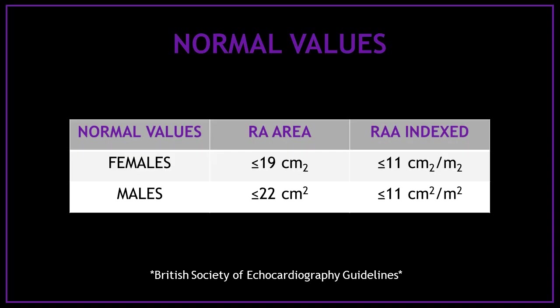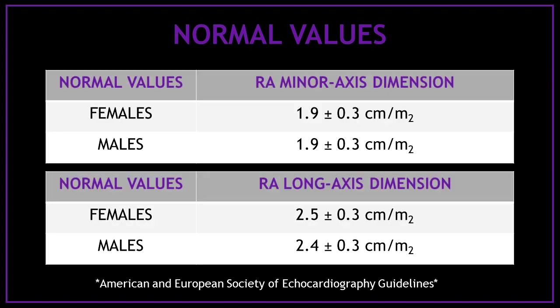These are the normal right atrial area values and the normal right atrial area index values for females and males, according to the British Society of Echocardiography. Here you can also see the normal right atrial minor axis dimension values and the normal right atrial long axis dimension values for females and males, according to the American and European Society of Echocardiography.